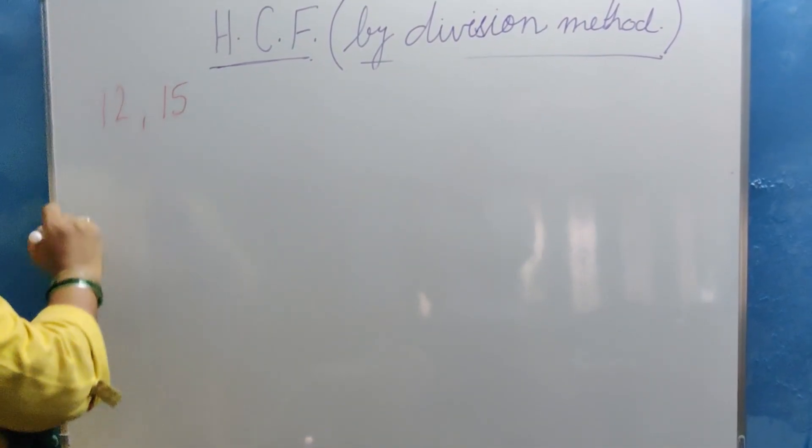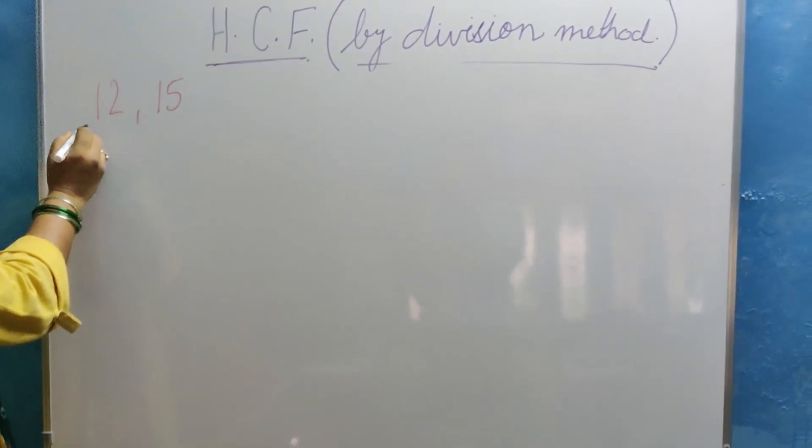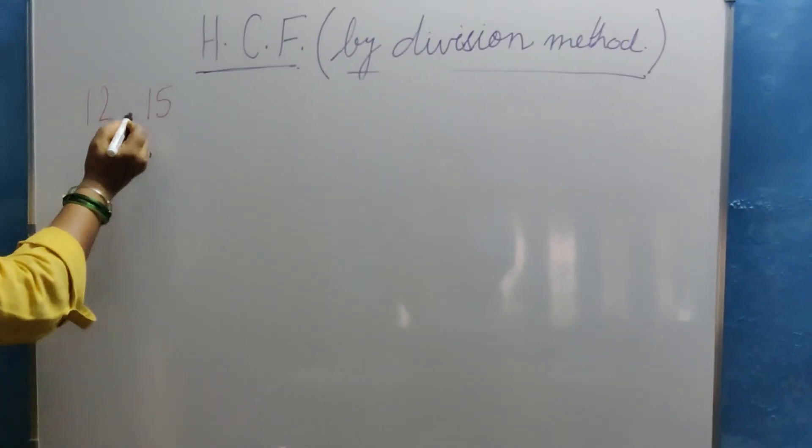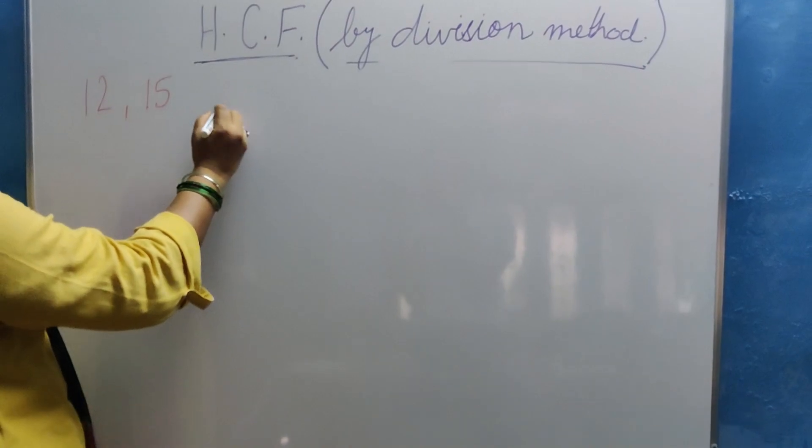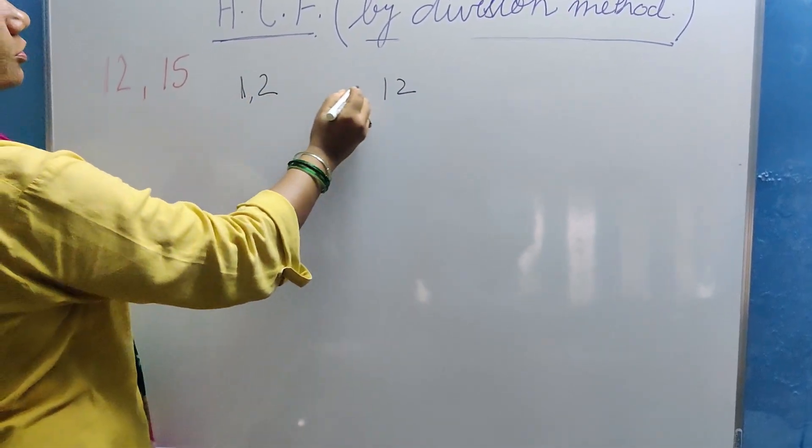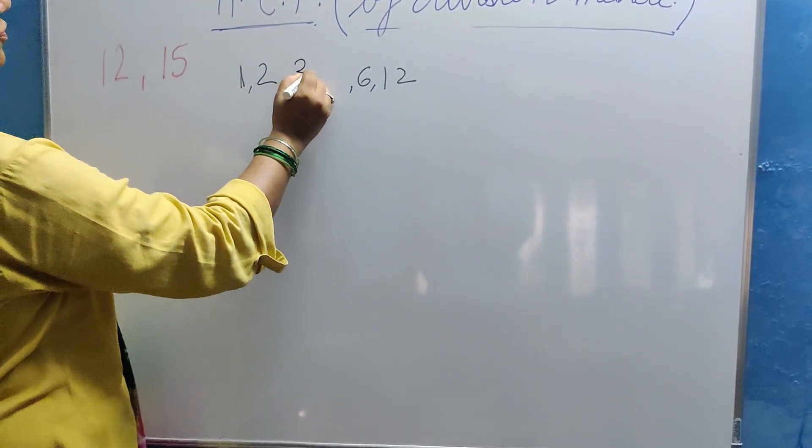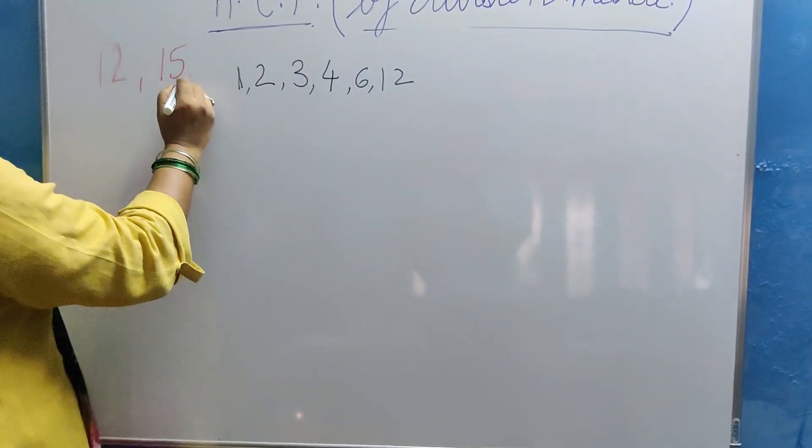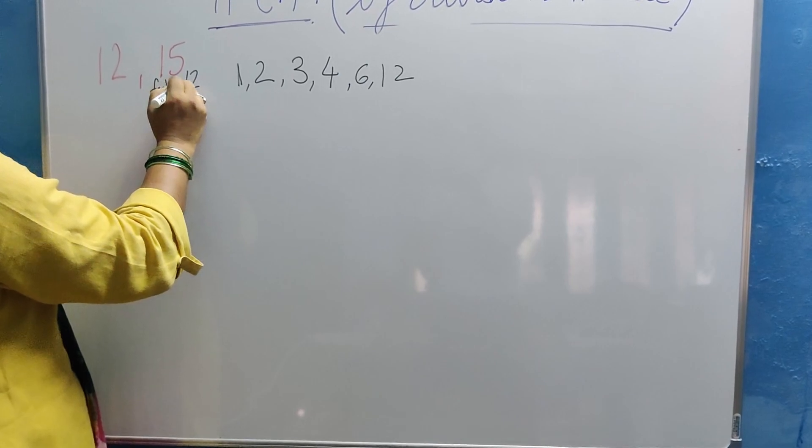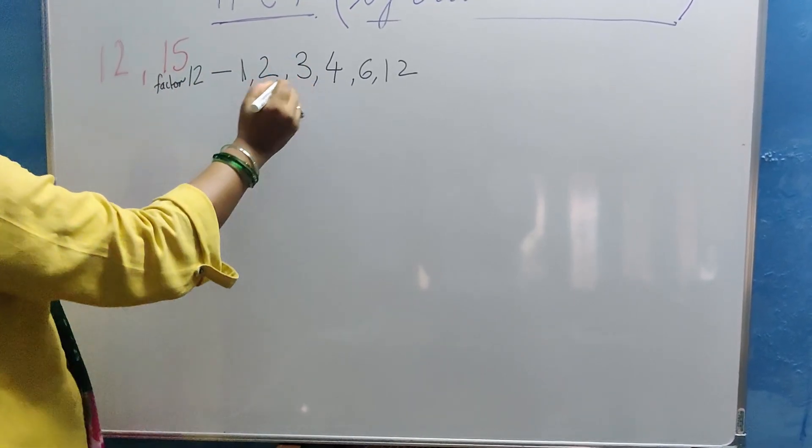Highest common factor. Let us take a very simple small example. Now you know all factors of 12. What are the factors of 12? 1, 12, 1 into 12 is 12, 2 into 6 is 12, 3 into 4 is also 12. These are the factors of 12.